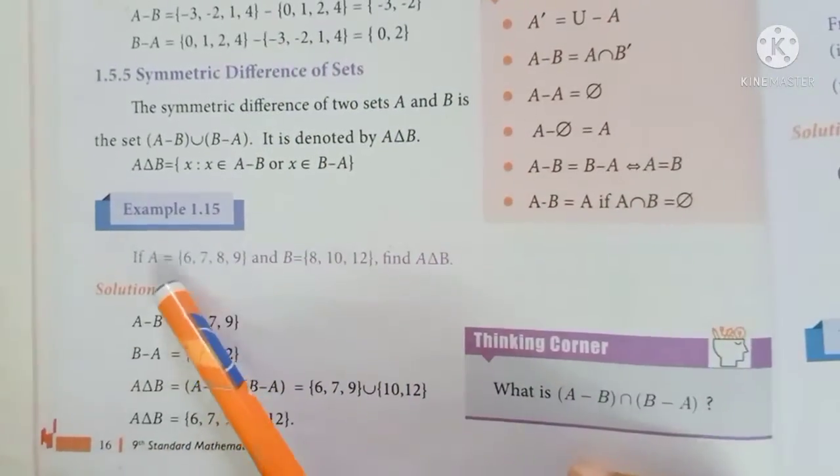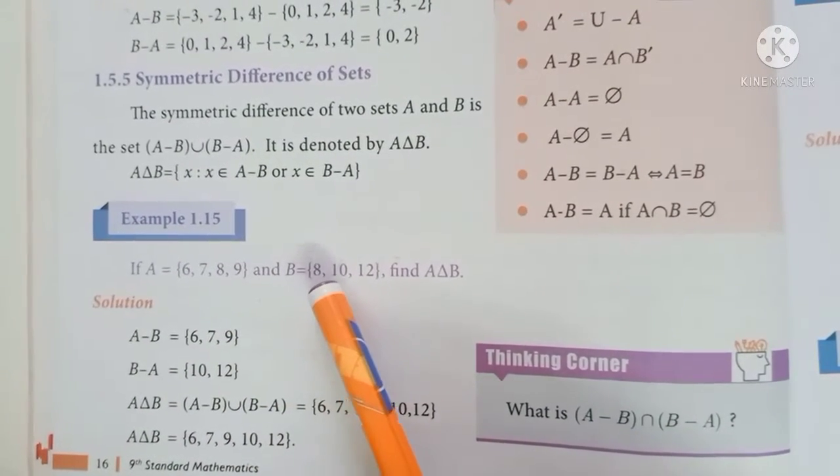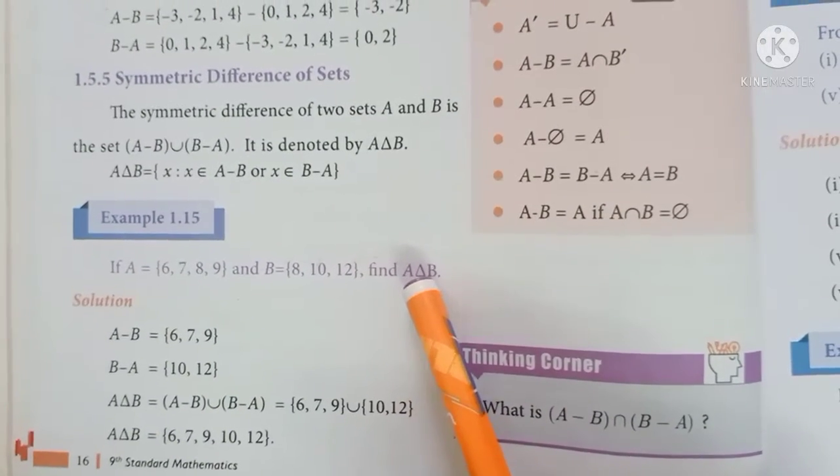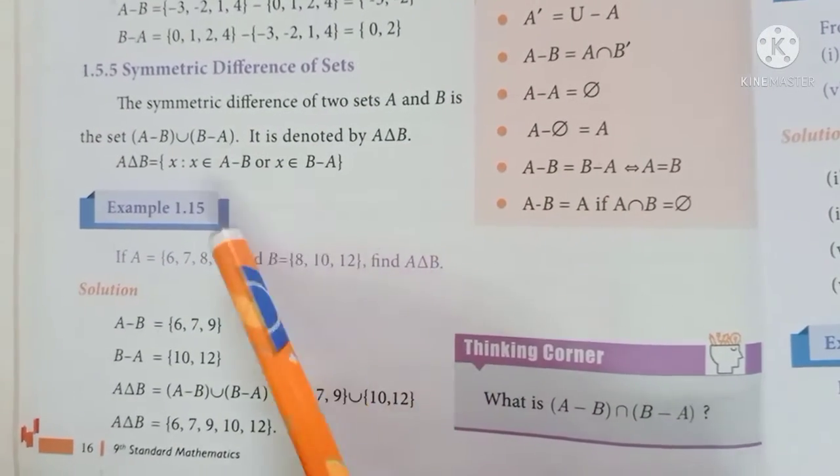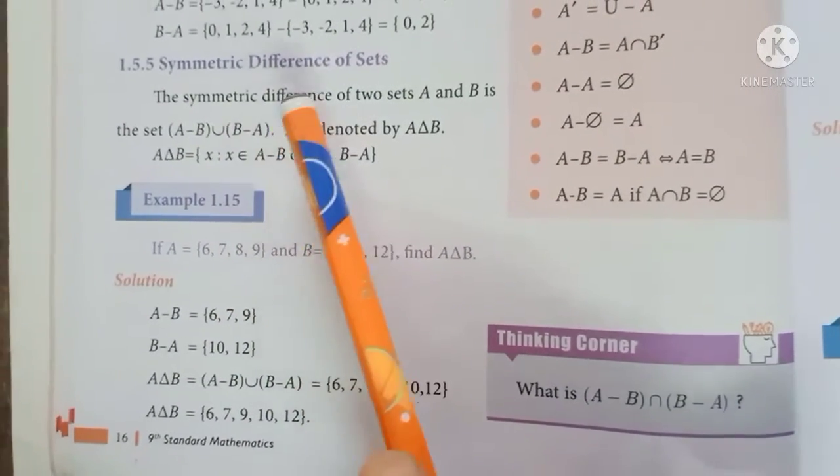For example 1.15: if A is equal to {6, 7, 8, 9} and B is equal to {8, 10, 12}, find A delta B, which is symmetric difference. The formula is A-B union B-A. Let's see how to solve this.